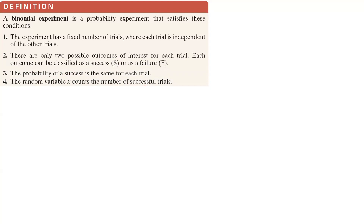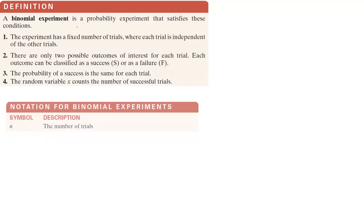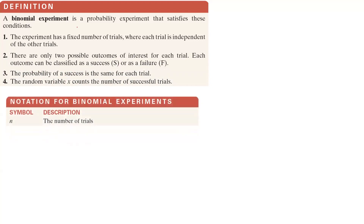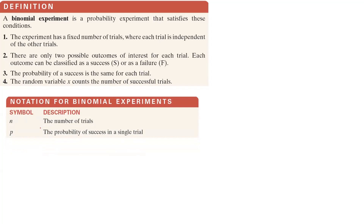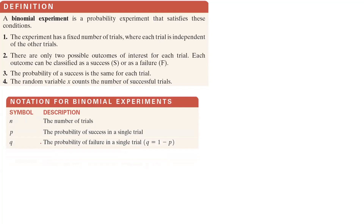So if you have a probability experiment that satisfies these four conditions, we call it a binomial experiment. The symbols associated with a binomial experiment are as follows: N represents the number of trials, and P represents the probability of success in a single trial.